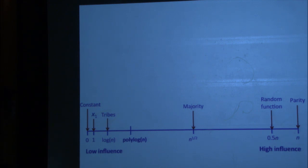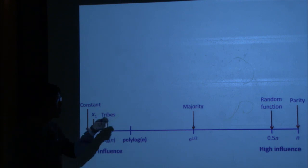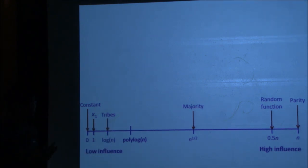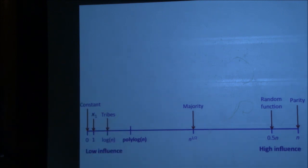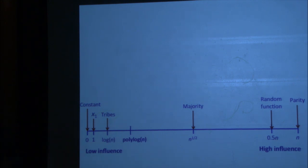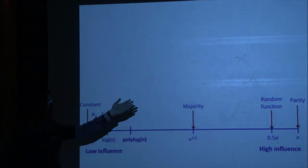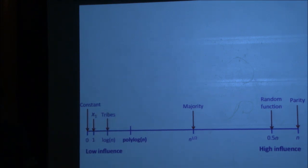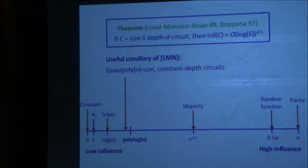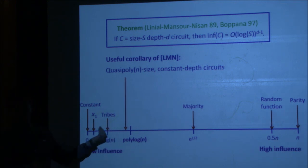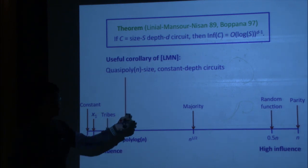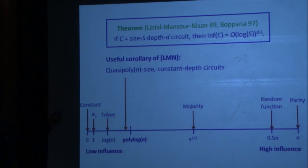Here's a picture of canonical functions listed by influence. Parity has the highest influence, n. Random functions have influence n/2. Majority has influence root n. At the low end, the constant-0 function has influence 0, the dictator has influence 1, and tribes (a simple DNF) has influence log n. Majority, random functions, and parity are all known not to be in AC0 — and LMN says this is not a coincidence. If you have quasi-poly size constant depth circuits, your influence is at most poly log n, which is low.